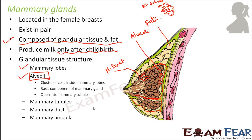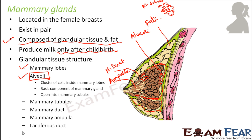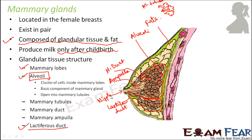Several mammary ducts join together to form a mammary ampulla. And then finally, several mammary ampullae join together to form a lactiferous duct. This lactiferous duct finally opens into the nipple. So humans have two complex mammary glands.